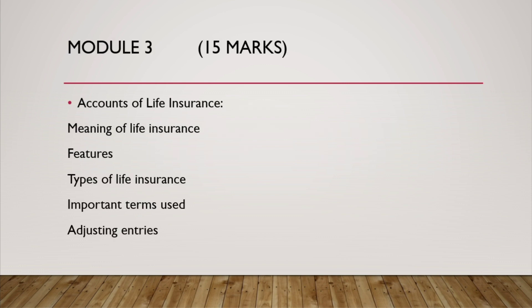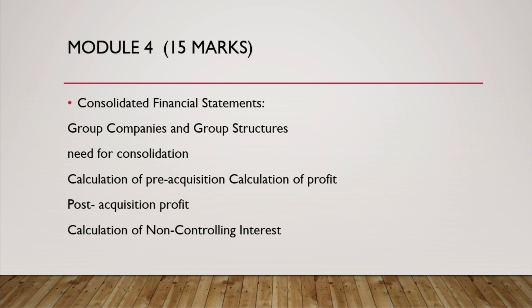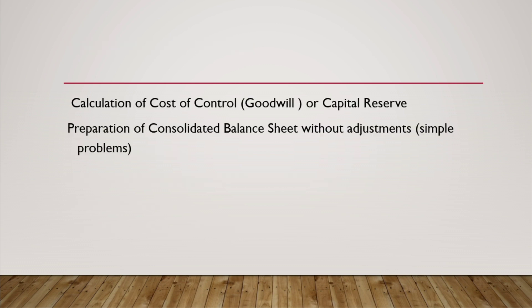Module 1 carries 25 marks, and Modules 2, 3, and 4 carry 15 marks each. Module 4 covers Consolidated Financial Statements, including group companies and group structures, need for consolidation, calculation of pre-acquisition profit, post-acquisition profit, calculation of non-controlling interest, calculation of cost of control, goodwill or capital reserve, and preparation of consolidated balance sheet without adjustments — simple problems.